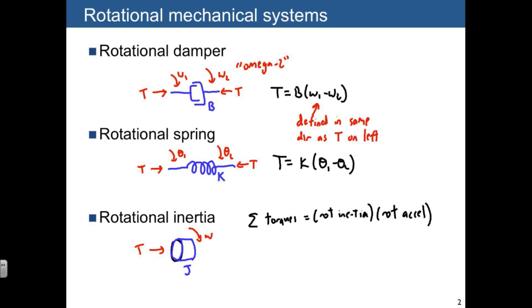And we want to talk about these torques defined in the direction. So we want both the torques and the acceleration to be defined in the same direction. So the way we would write this one is sum of torques is equal to J times omega dot, which is our angular acceleration.